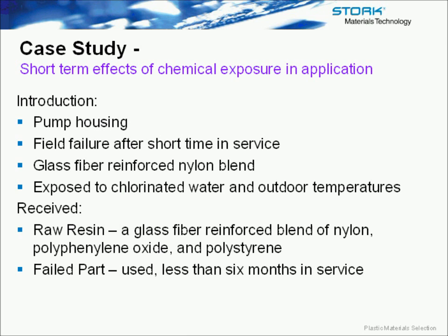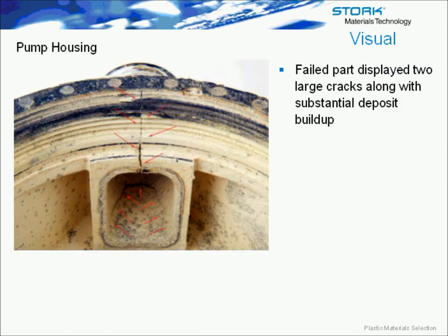The first case study is going to look at the short-term effects of chemical exposure in an application. The part is a pump housing, basically exposed to chlorinated water at outdoor temperatures. Field failures were noticed after about six months in service, and the material was a glass fiber-reinforced nylon blend. We received, for analysis, raw resin as well as a failed part. Here's an example of the cracking that was visually evident in that housing — you can see cracking both along the threaded area as well as through one of the ports on the bottom.